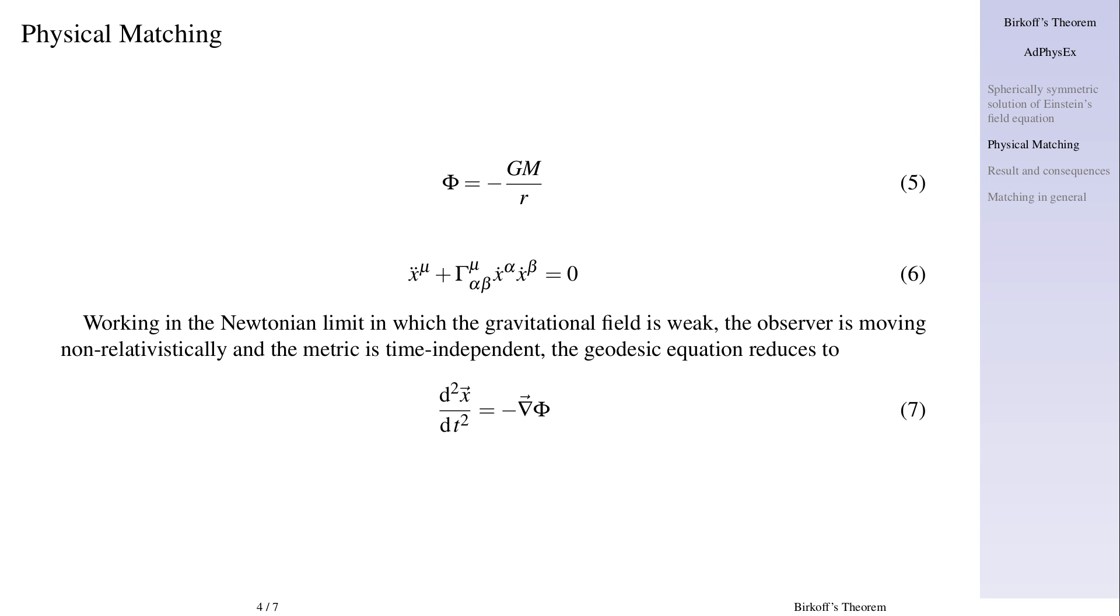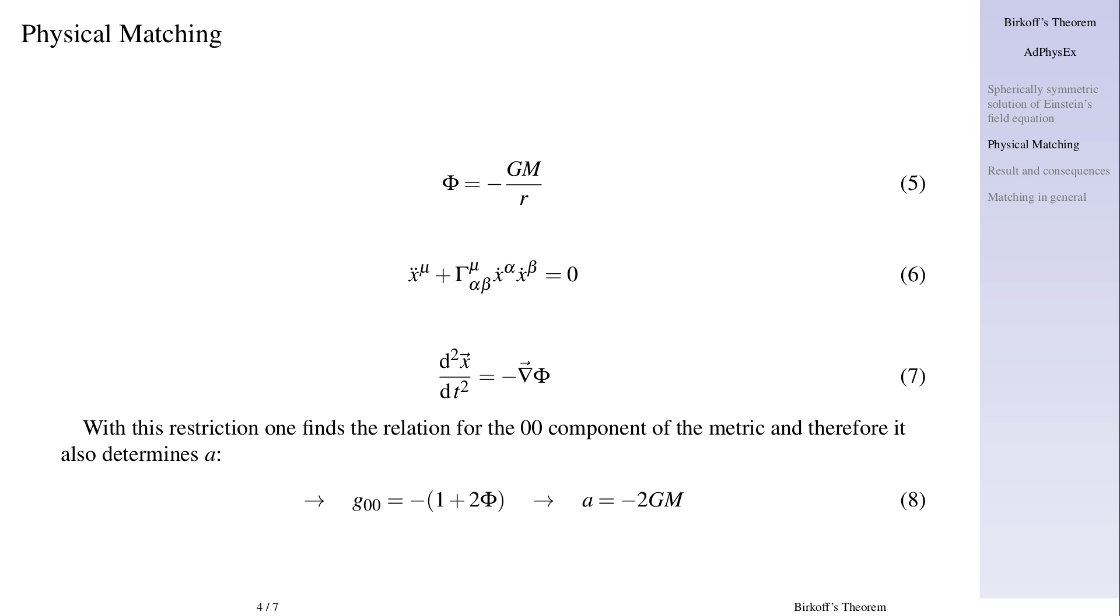Working in the Newtonian limit in which the gravitational field is weak, the observer is moving non-relativistically and the metric is time independent, the geodesic equation reduces to second time derivative of spatial vector x equals minus the gradient of phi. With this restriction one finds the relation for the zero-zero component of the metric and therefore it also determines a: g zero-zero equals minus one minus two phi which implies a equals minus two GM.